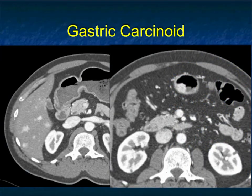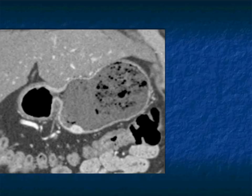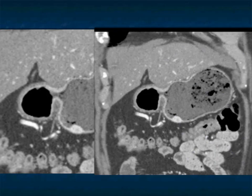A small, well-defined tumor — I don't see any adenopathy. Again, one of the differentials for a gastric vascular mass. Here it is nicely on the coronal views, sitting along the greater curvature of the stomach.